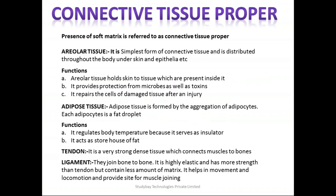The first type is connective tissue proper, identified by the presence of a soft matrix. This connective tissue proper has specific sub-classes: areolar tissue, adipose tissue, tendon, and ligament.